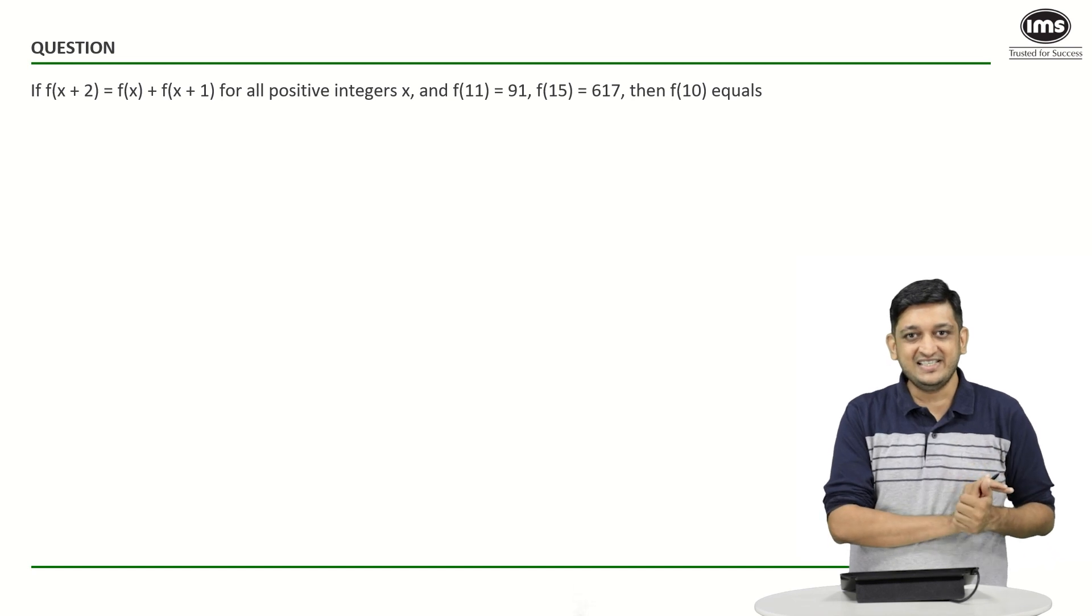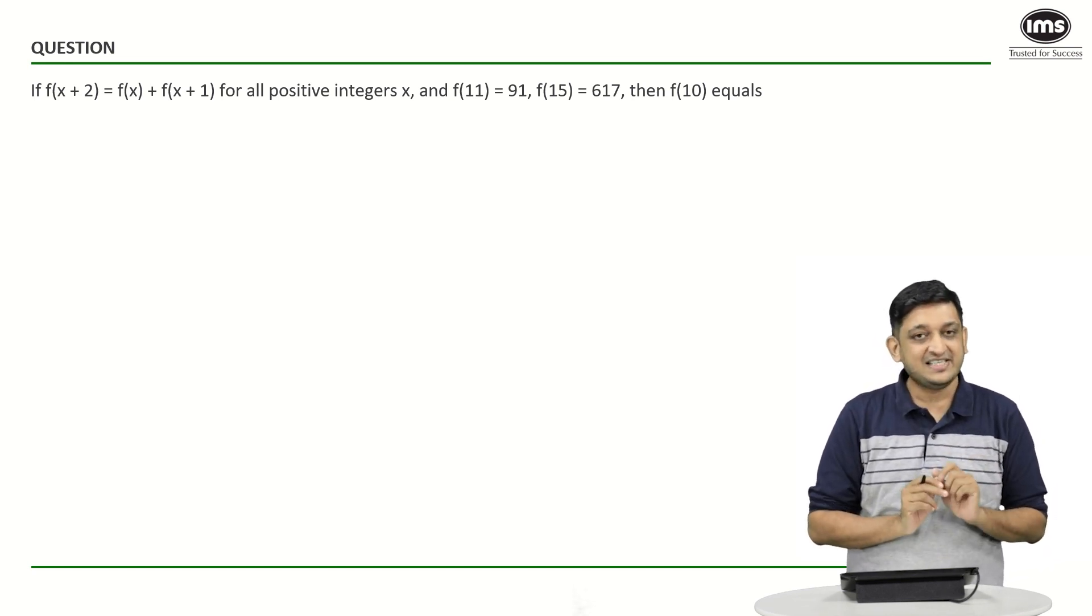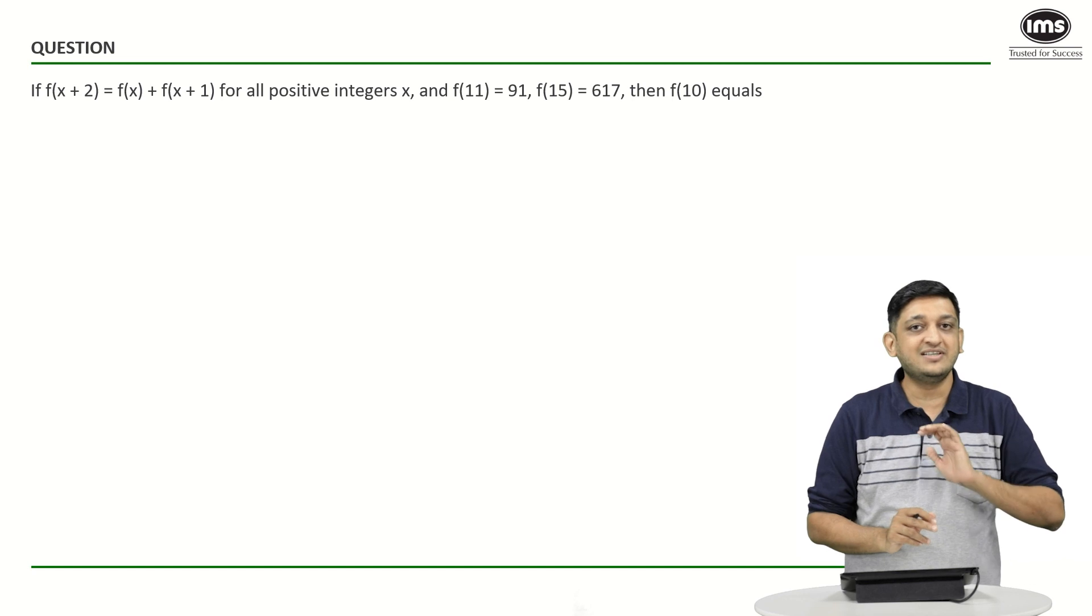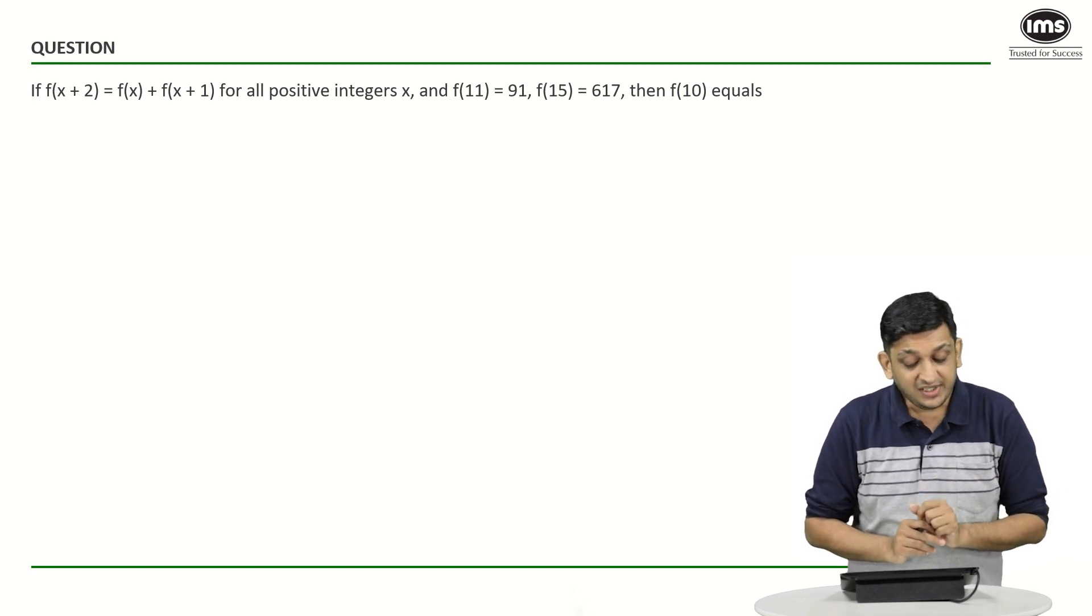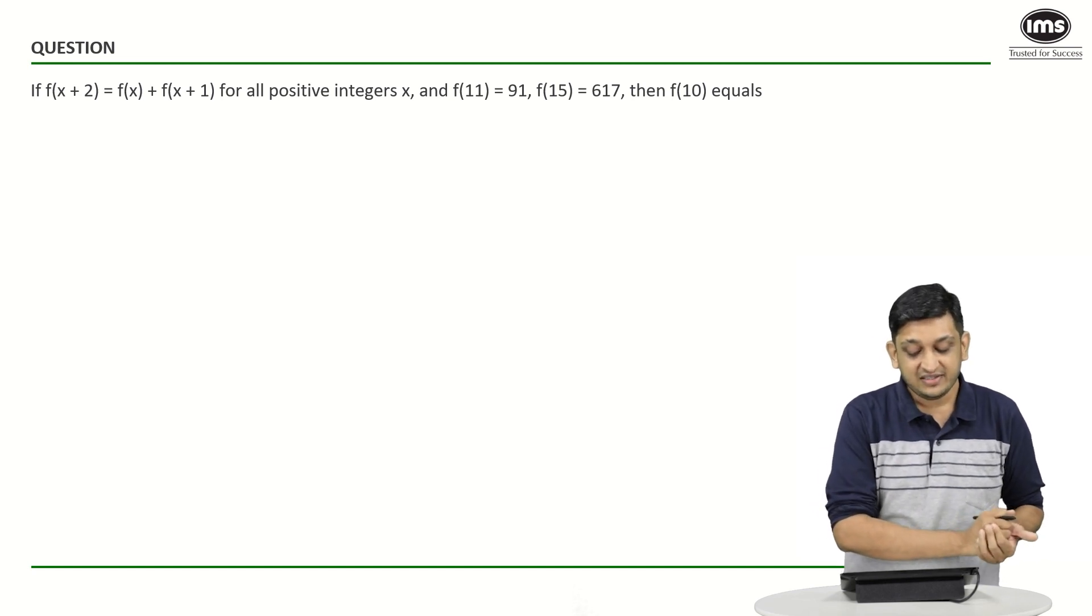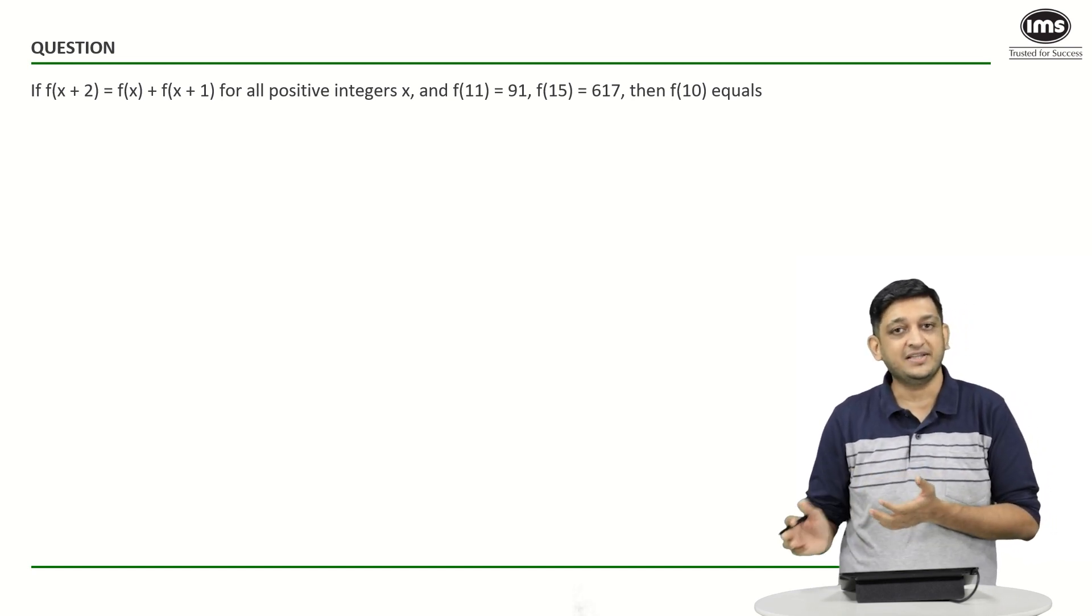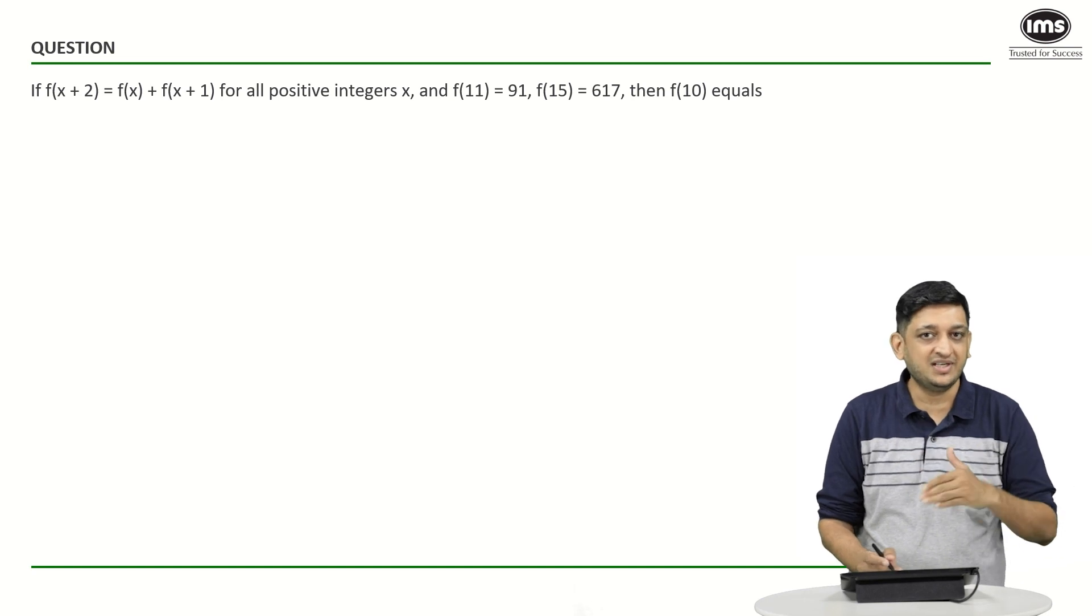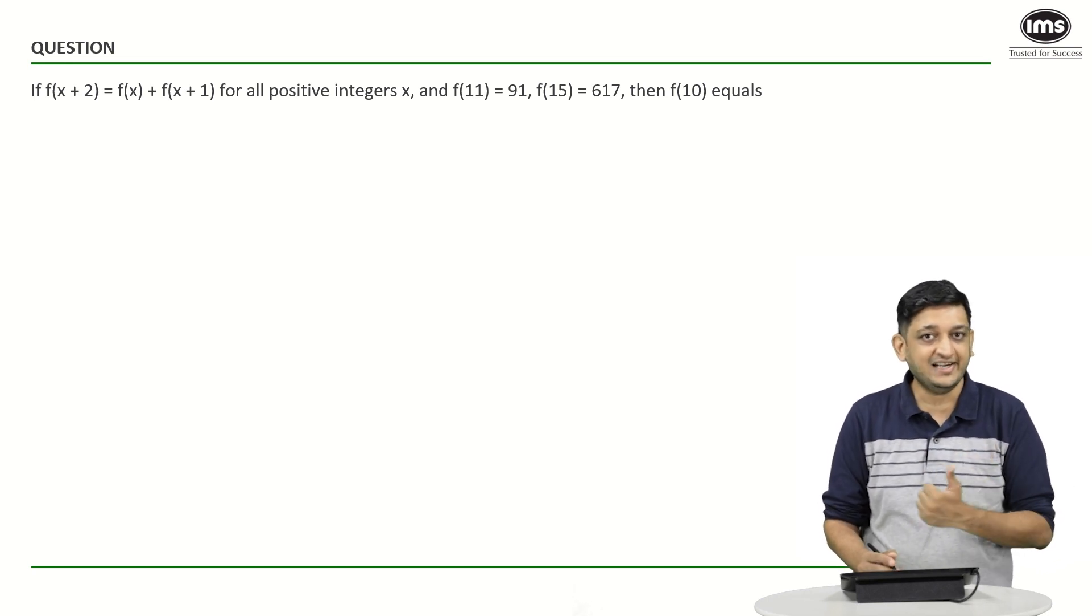This is basically a series that I will not talk about. That is basically the nature of the function. It holds true for all positive integers x. We know that f(11) = 91, f(15) = 617, then we have to find what is the value of f(10). Fairly straightforward question, you just have to substitute the values and try to figure out what exactly happens.